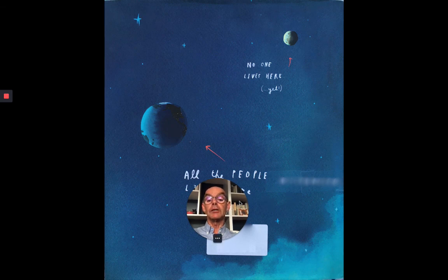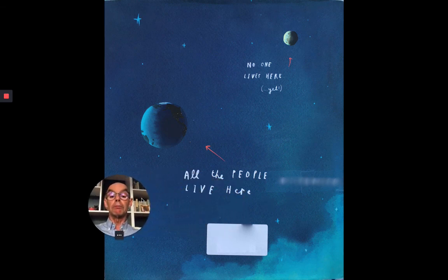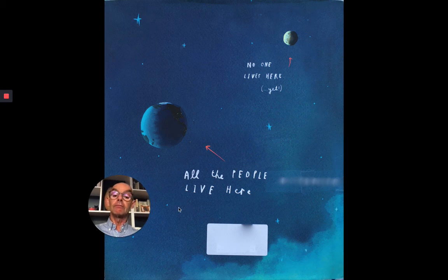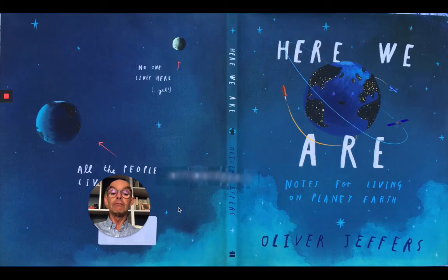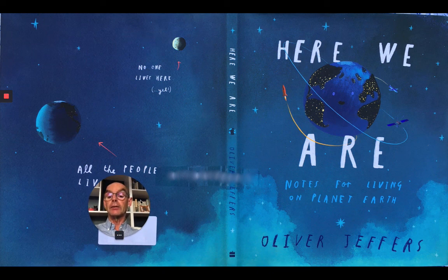And look, there's the back of the book. All the people live here. Can you see the arrow? That's the Earth. No one lives here yet. Do you know where that is? It's the Moon. There's the front and back cover.